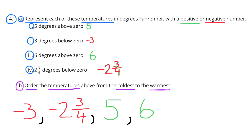B. Order the temperatures above from the coldest to the warmest. The furthest below 0 in this case would be negative 3, then negative 2 and 3 fourths, then 5, and then the warmest would be 6.